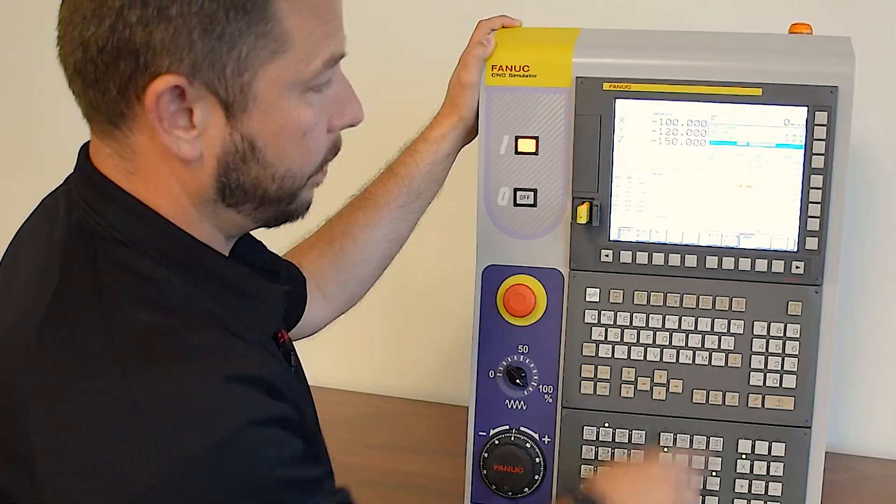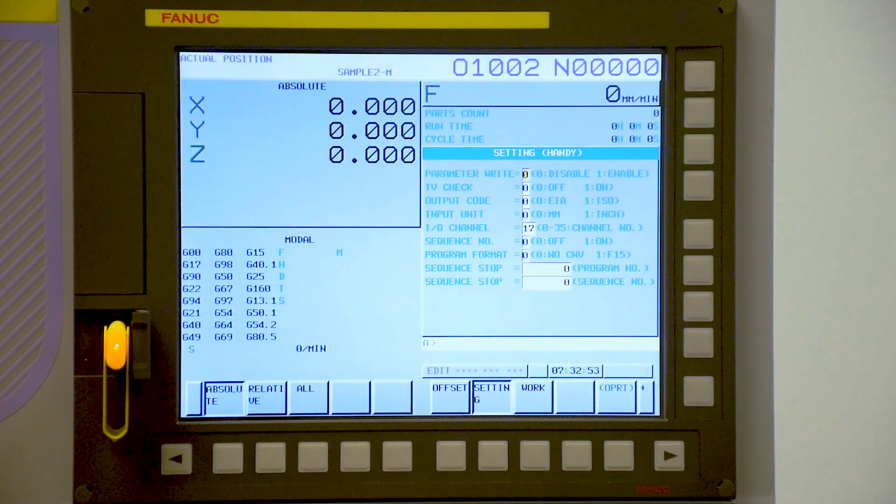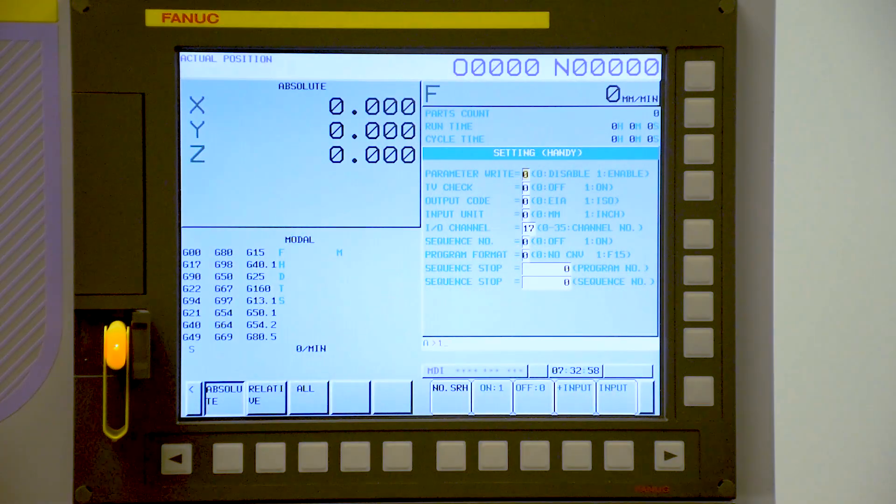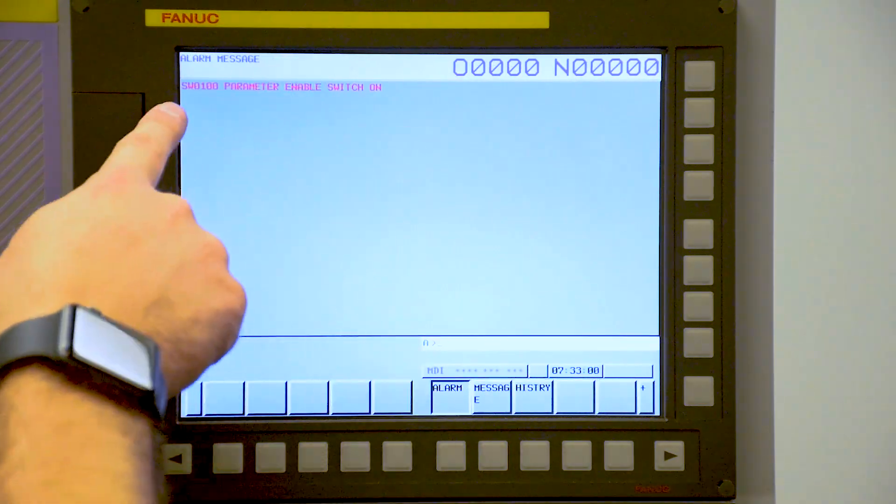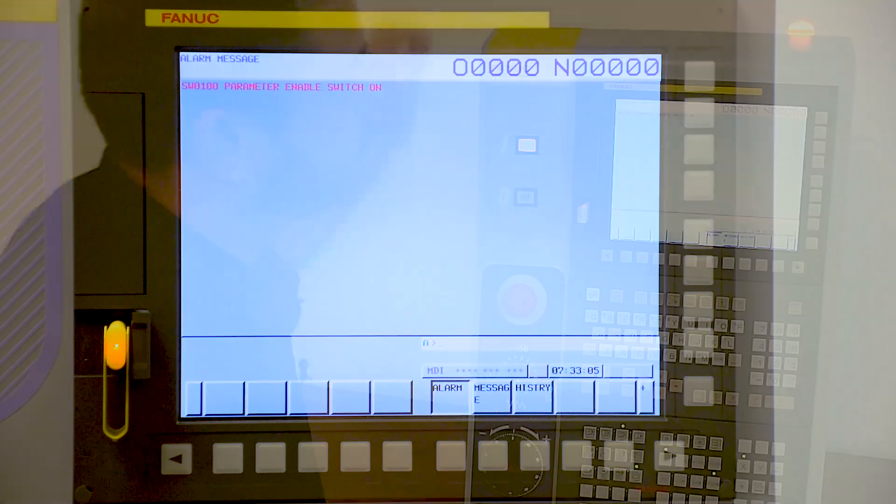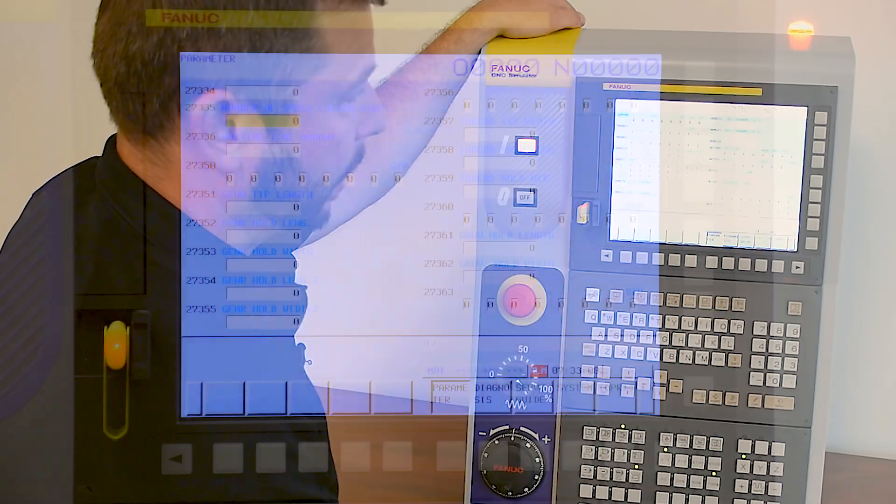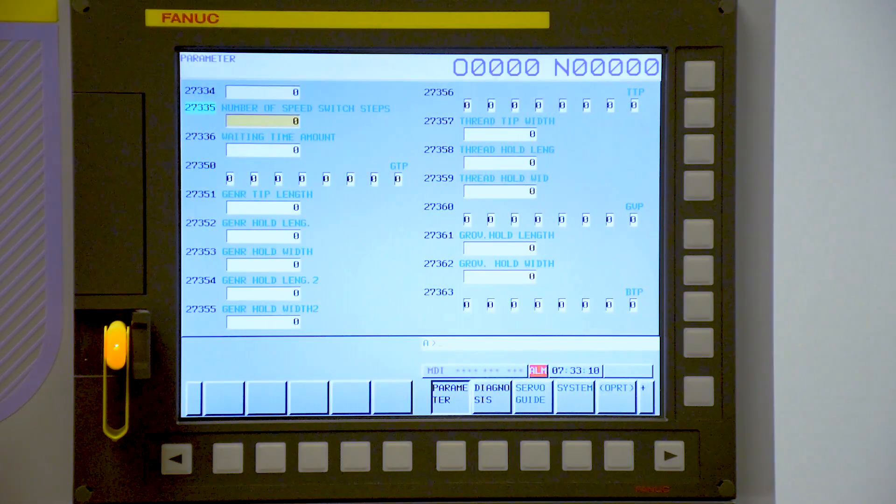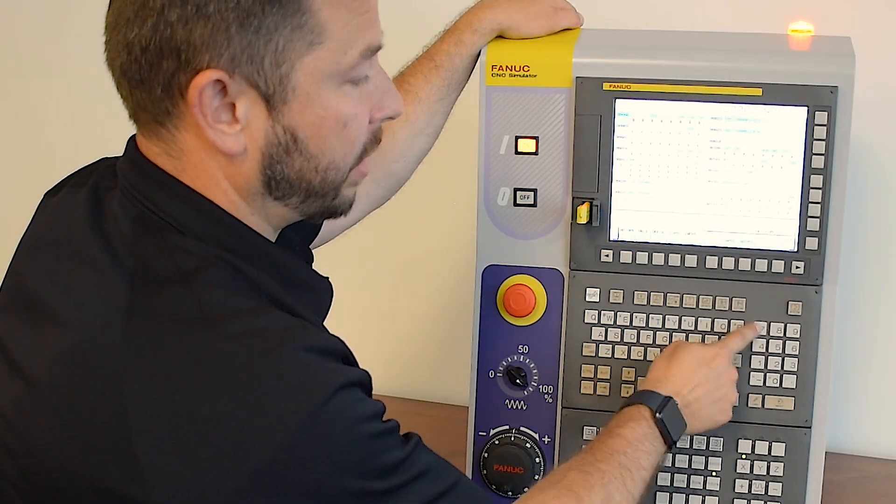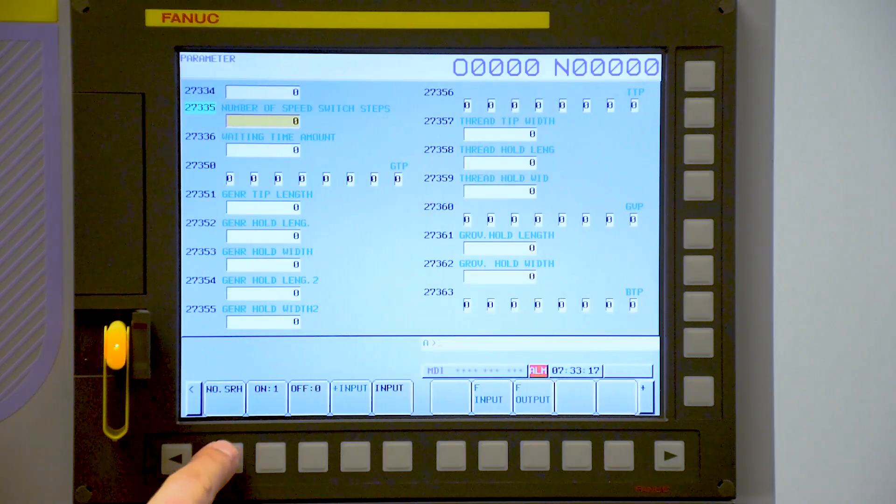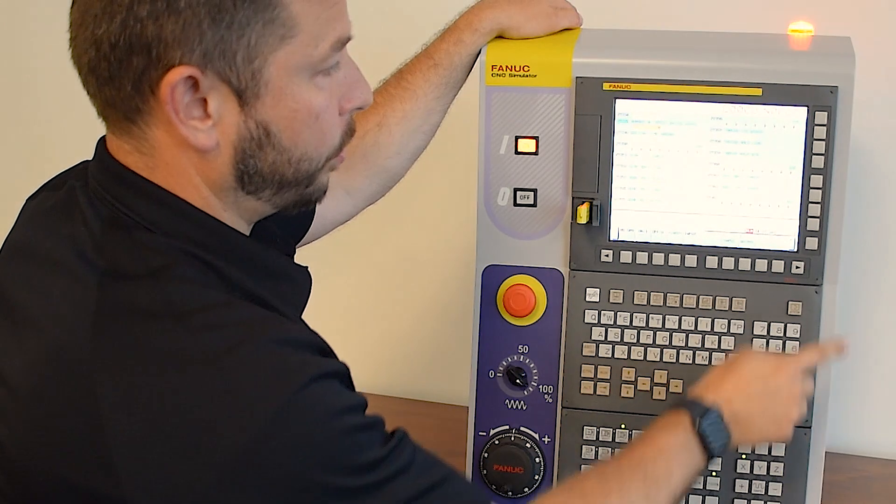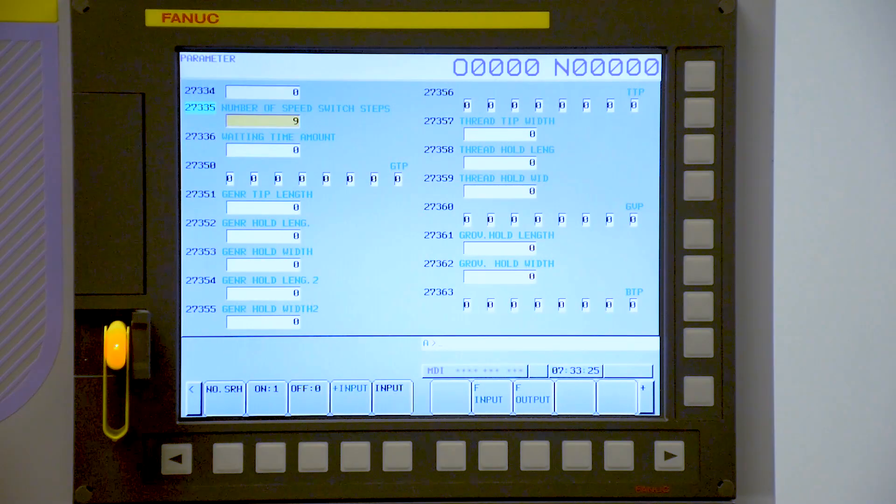First of all, we go back to the offset screen, press the setting button, select MDI, turn on our parameter right enable. This is going to trigger an alarm on the control. Now this control is receptive to parameter changes. Press the system. Now we're into the parameter screen. The parameter for this particular speed step switches is 27335. Number search, number of speed step switches. We select this to a nine. Press input. The parameter changes.